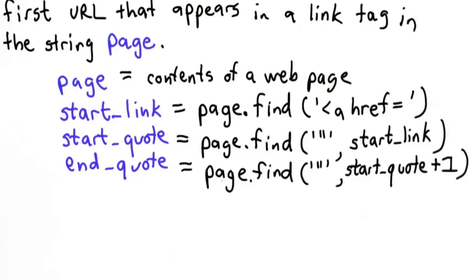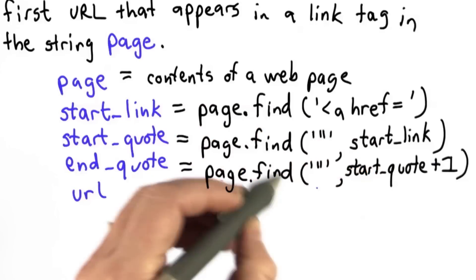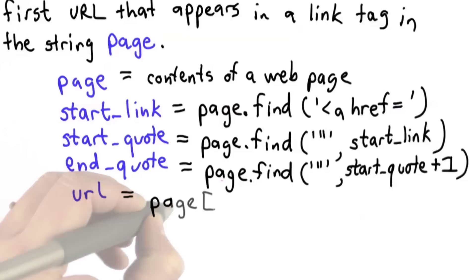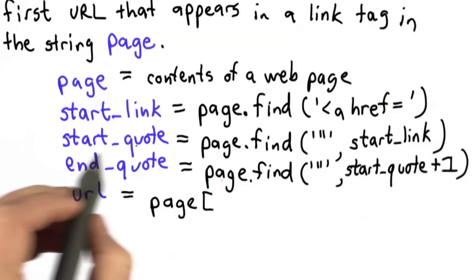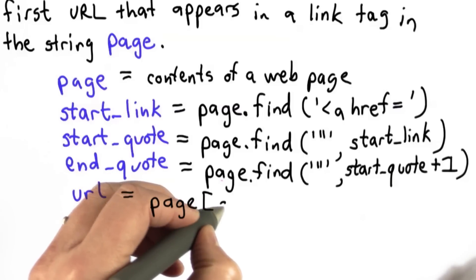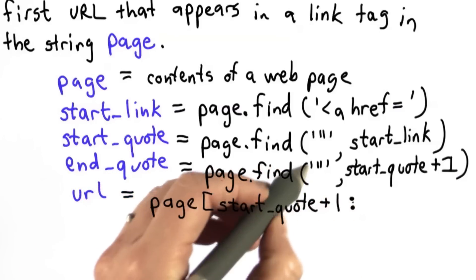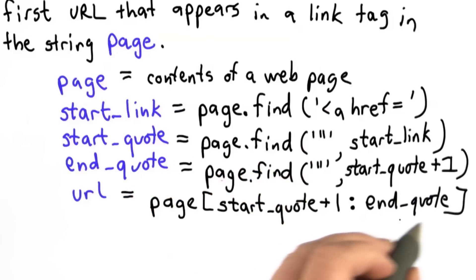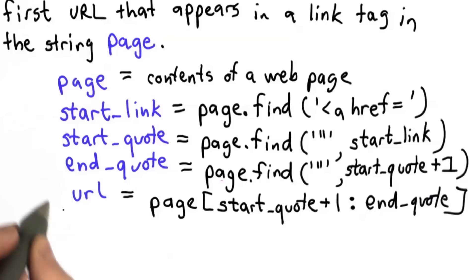The final thing we want to do is set the variable URL. We'll initialize URL to the string we find between the start_quote and the end_quote, using string selection on page. We have to think carefully about where we start — we don't want to start with start_quote because that would include the double quote in the URL. So we start from start_quote plus one, and go until end_quote. We don't include the closing double quote, so we don't subtract one from end_quote. That gets us the URL extracted from the first link on the web page.